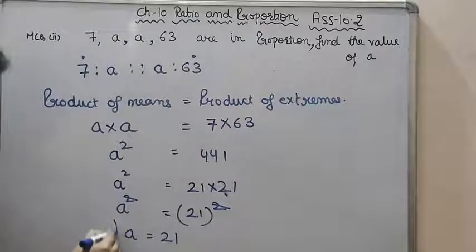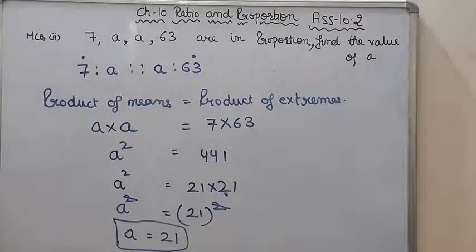What was it? A term was missing in the proportion. So we applied the property of proportion. What is our property? That product of means is equals to product of extremes. We multiplied and found out the value of the missing term. Okay, I hope this is clear. I have covered all types of questions in this assignment. And I will send the PDF of assignment 10.2 along with this video. So you have to complete this assignment. Good luck.